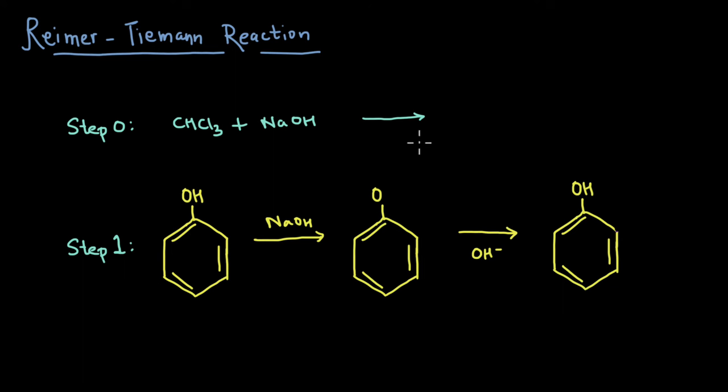So now to bring everything together, we started the reaction by our preparation step, in which we had chloroform reacting with NaOH, to give us our reactant, which is CCl2, or dichlorocarbene. And then in the first step, when we reacted the phenol with NaOH, we got this phenoxide anion.